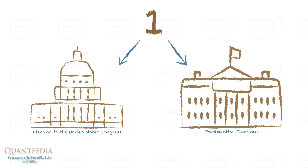Election day is specially set by United States law. Congress defined the occurrence of election day as the Tuesday next after the first Monday in the month of November. This implies that election day has to be between November 2nd and November 8th of every even year.